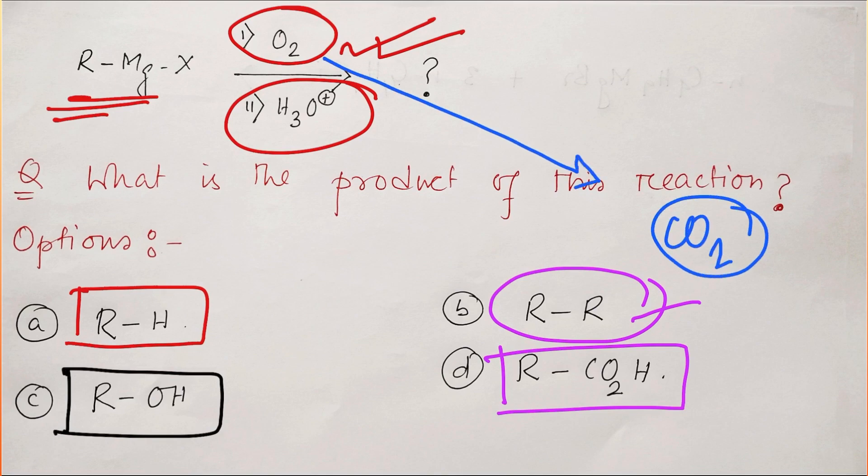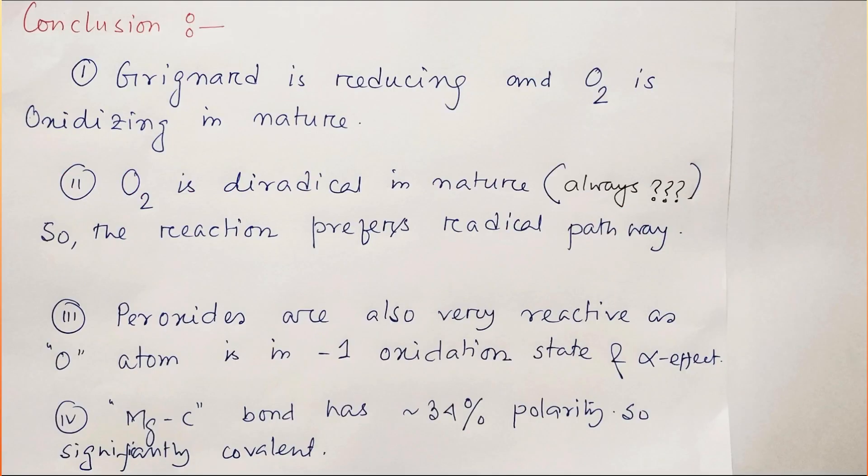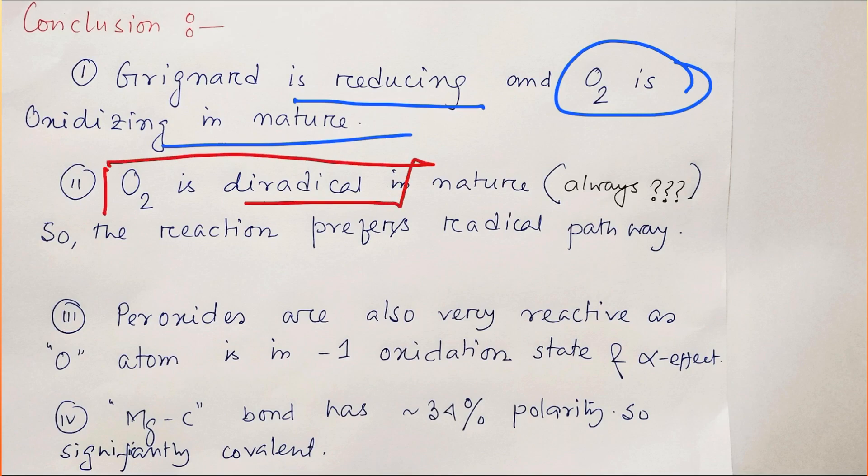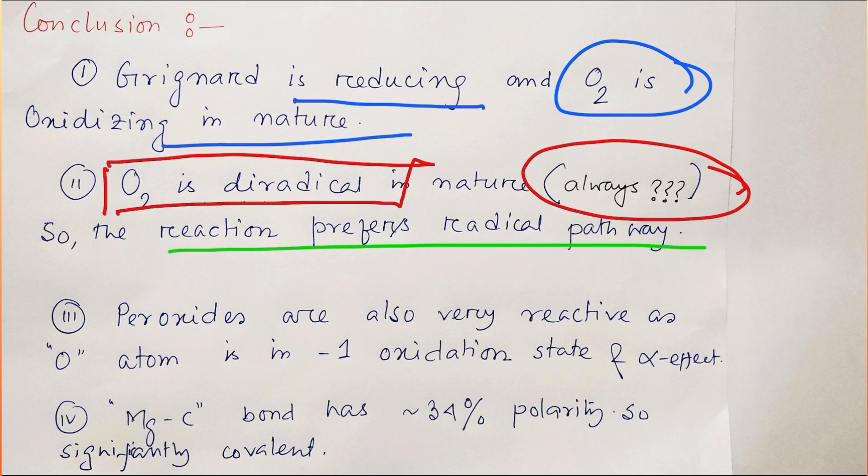So this is the answer. In conclusion, what have we learned? We have learned that Grignard reagent is actually reducing in nature and oxygen is oxidizing in nature. And oxygen—the naturally available oxygen—is diradical in nature, that is triplet. But it is not always diradical because there is a variation of oxygen which is singlet oxygen. Since it is a diradical, the reaction prefers the radical pathway. And remember, peroxides are also very reactive as oxygen atom is in -1 oxidation state and the alpha effect—that is, severe lone pair-lone pair repulsion of the two adjacent oxygen atoms.